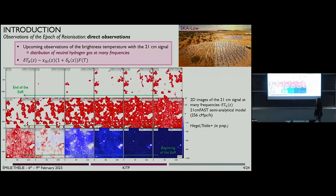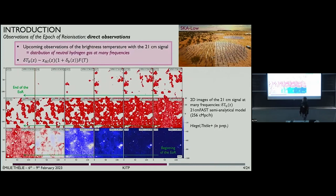This signal will be probed at many frequencies and many redshifts. These are simulated maps with 21cm patches. Here is the beginning of the epoch of reionization, and if you go over there, you reach the end of reionization. You can particularly see these white bubbles that grow and grow until it's all white, meaning that the gas is totally ionized. Within these maps, we have a lot of information.